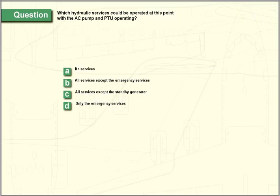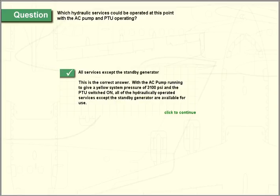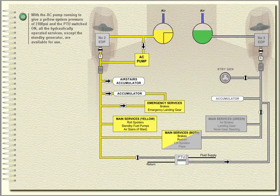Which hydraulic services could be operated at this point with the AC pump and PTU operating? With the AC pump running to give a yellow system pressure of 3,100 PSI and the PTU switched on, all the hydraulically operated services except the standby generator are available for use.